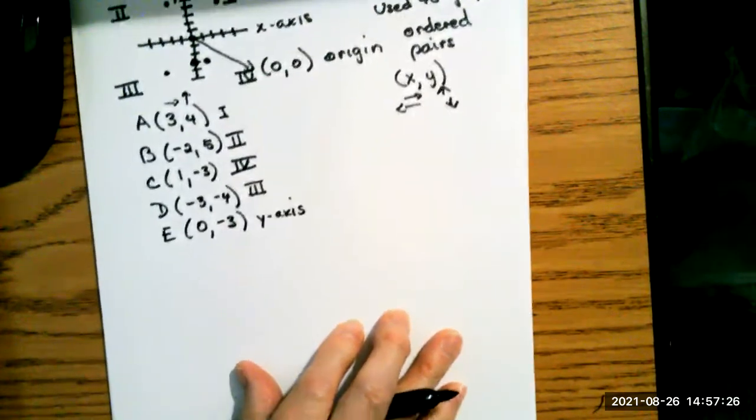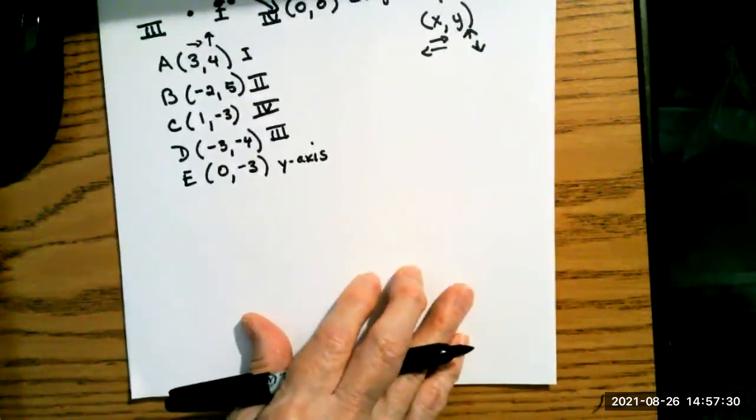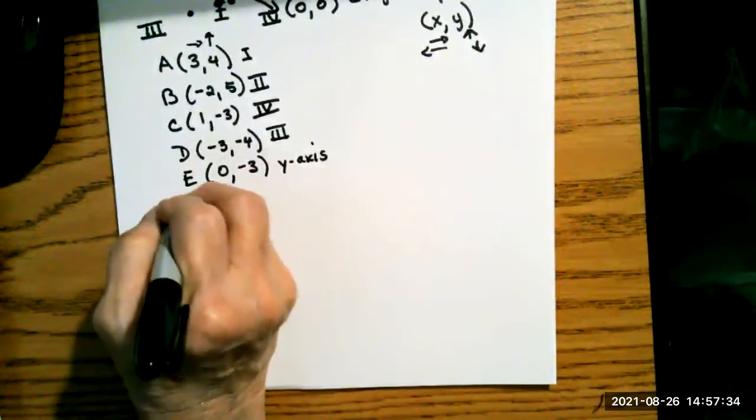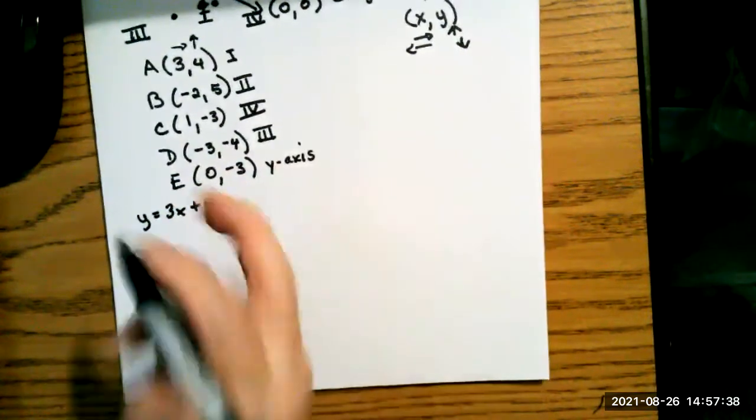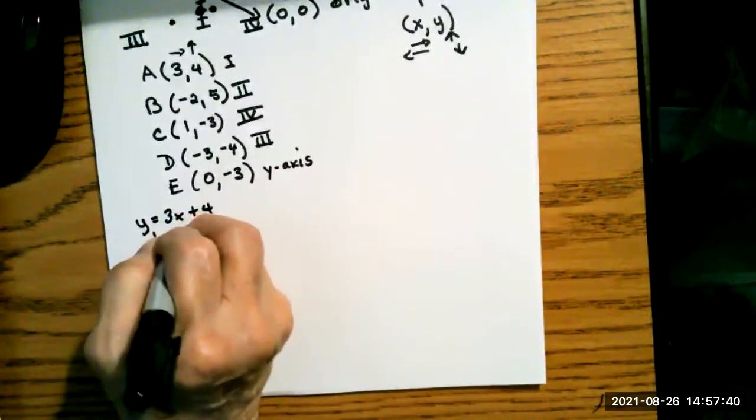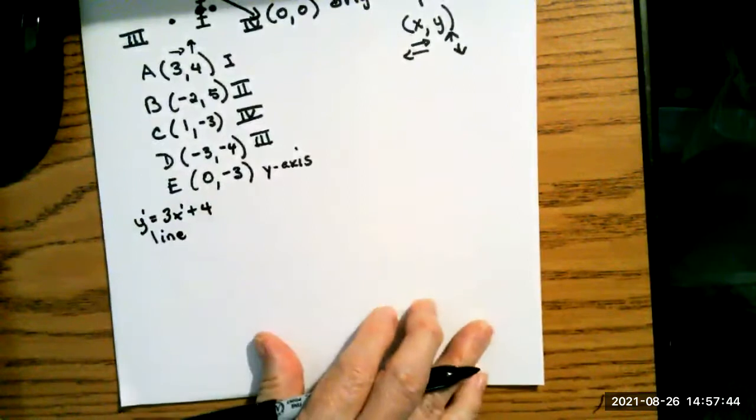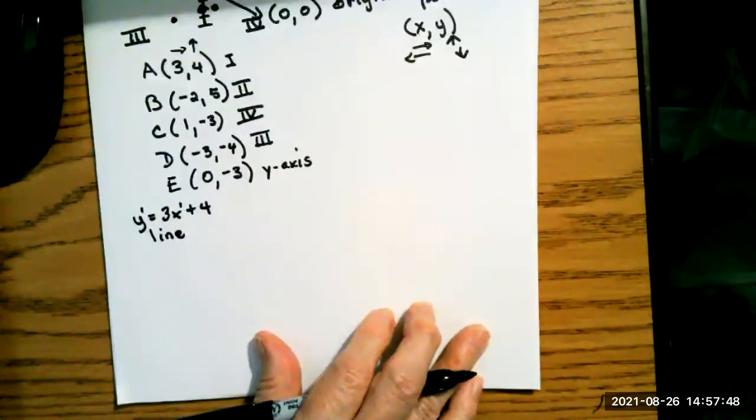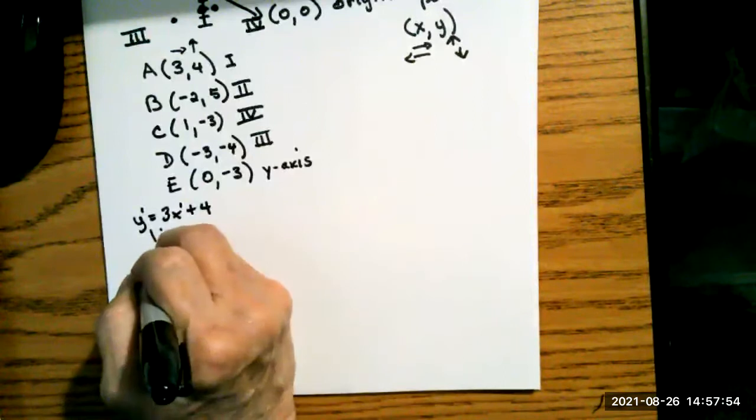Like I told you, we use this system to graph equations, and we're going to start with our very first equations today. The first one we have is y equals 3x plus 4. I know it's a line because x is to the first power and y is to the first power. If I use my graphing calculator to calculate it, I can see that it makes a shape of a line.